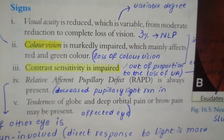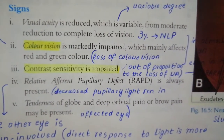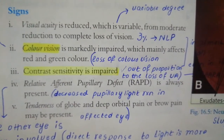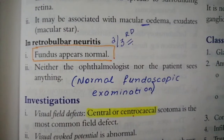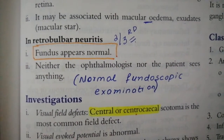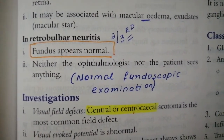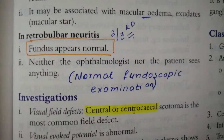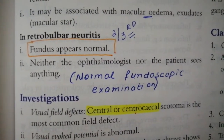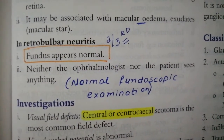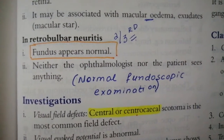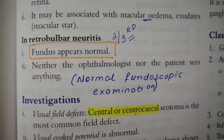Fundoscopic findings are variable and quite important. In two-thirds of cases there will be no finding on fundoscopy — this is retrobulbar neuritis. In one-third of cases the optic nerve head will show blurred margins.